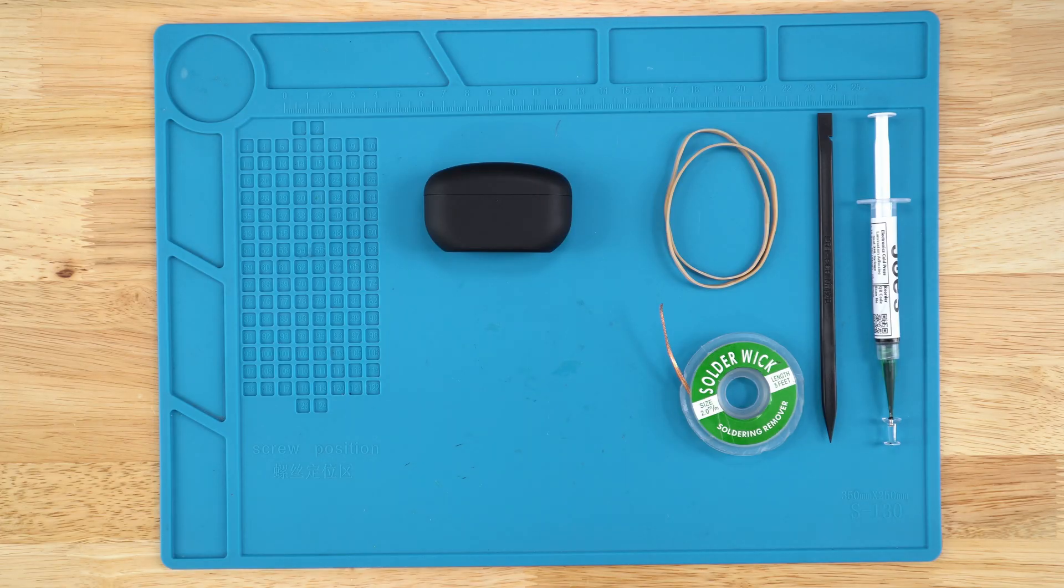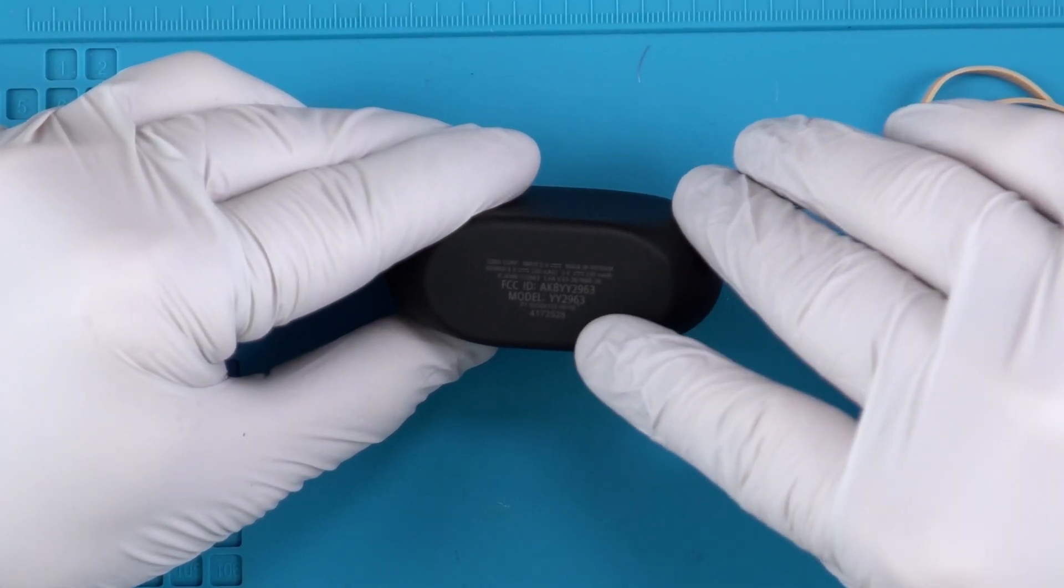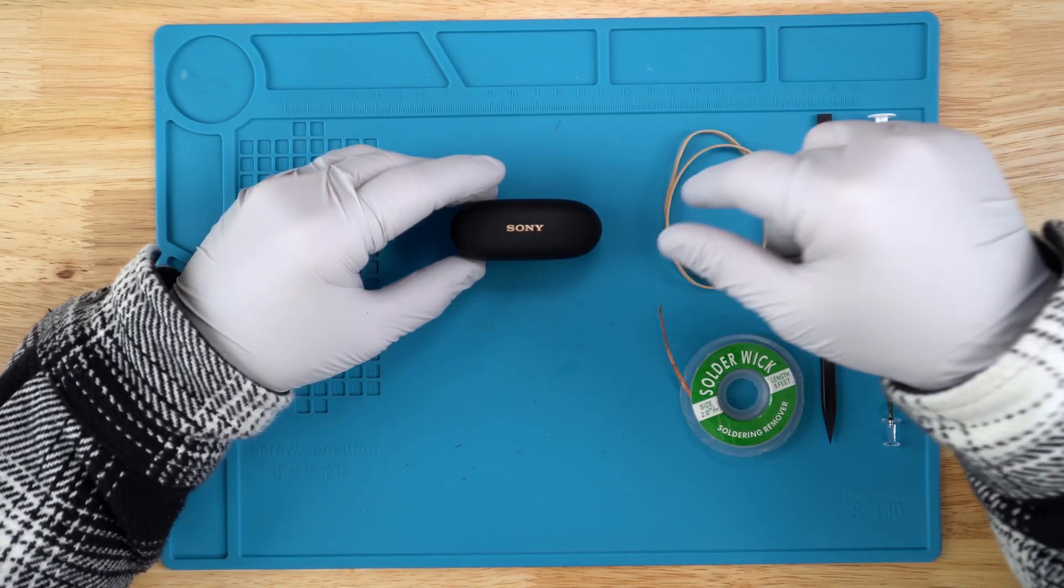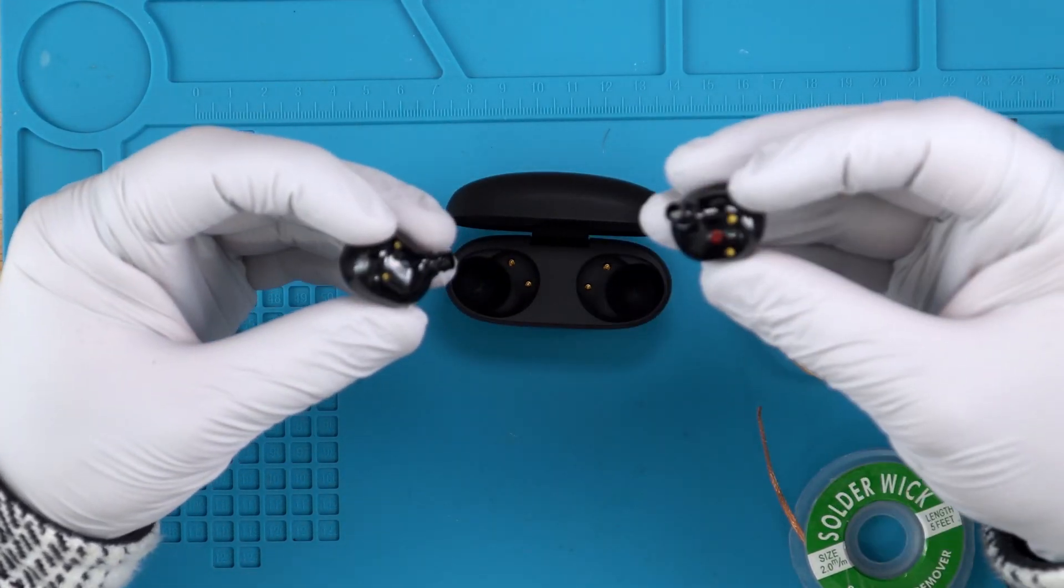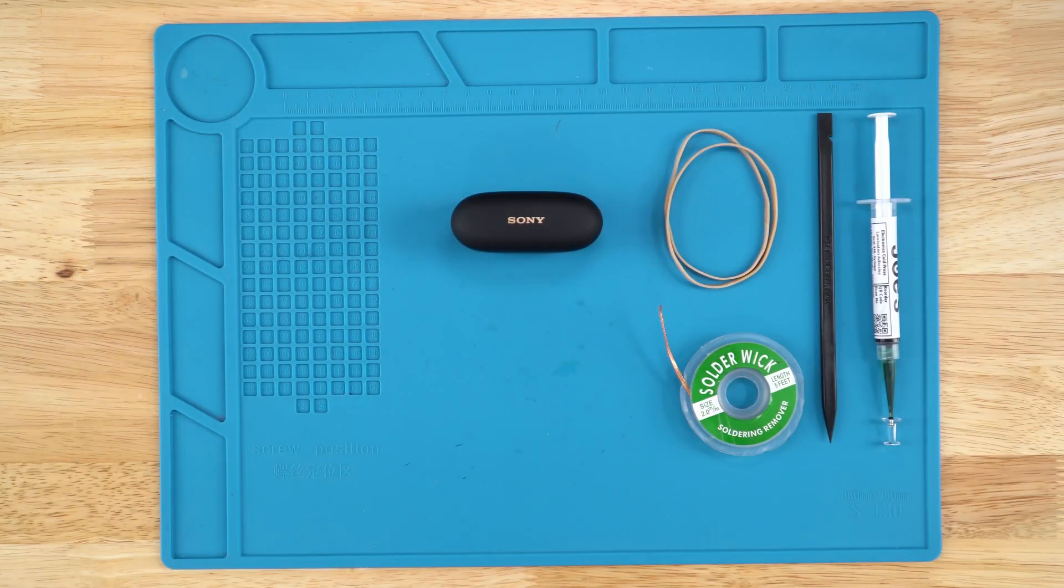Jojee here. In front of me I have the WF-1000XM5 and the model number on the case here you would see as YY2963. Today we will be replacing the batteries on both the left and the right side and all the tools and parts you will be able to find in the description and in the pinned comments below.